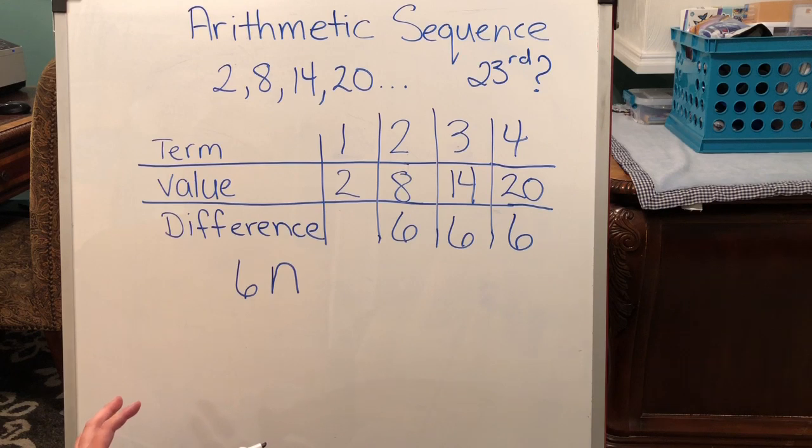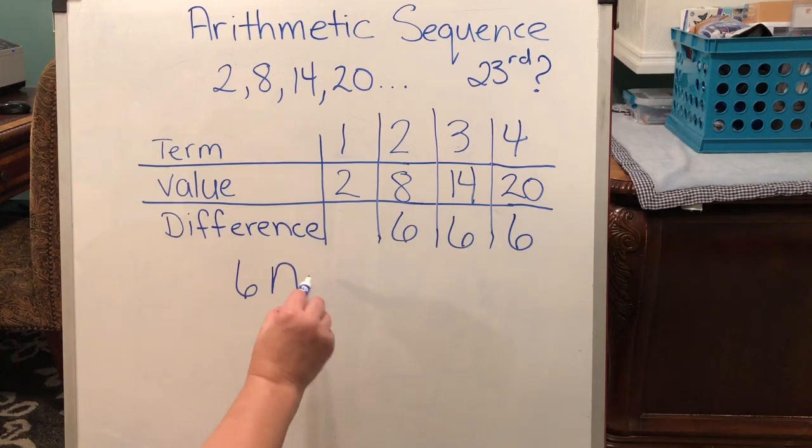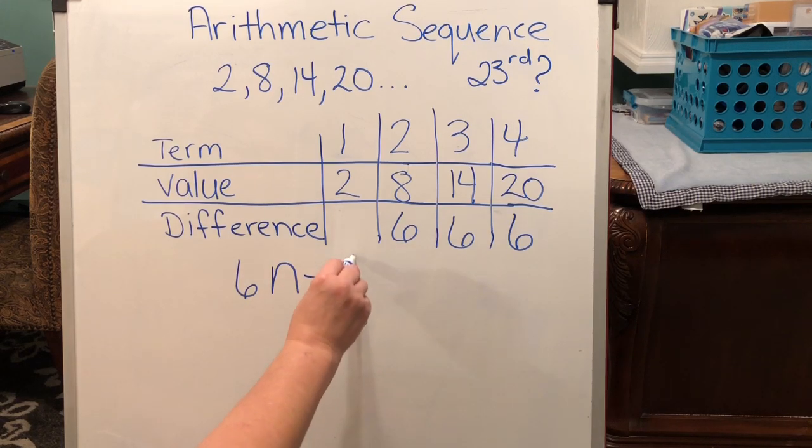Multiplying the difference by the term alone does not give us the right answer. So, for example, if I want to find the third term, and I take the 3 for the third term number, term number 3, times by 6, I get 18. I do not get 14. So what do I have to do to the 18 to get the correct answer? Well, I would get 18, but I really want 14, so I would have to subtract 4. Let me go over that one more time.